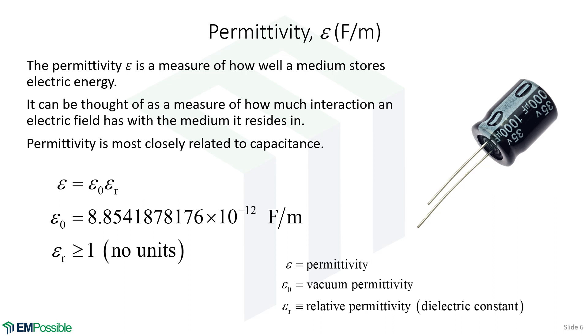So the permittivity, it's a measure of how well a medium stores electric energy. And what we'll see, there's actually two ways we can have electric energy. There's energy in the field itself, but there's also electric energy that matter can store. And that's in the form of displaced charge. A little bit more loosely, we can just think of the permittivity as a measure of how much electric fields interact with a medium. And so since we're talking about storing electric energy, clearly permittivity is most closely associated with capacitance.